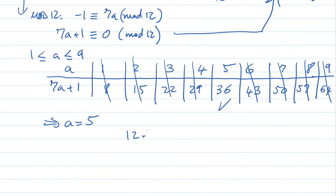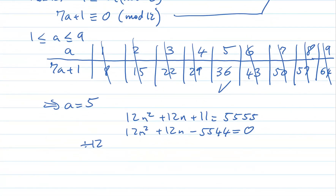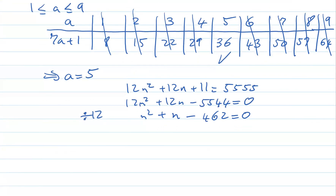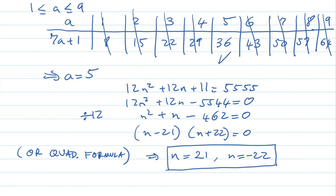This gives the equation 12n² + 12n + 11 = 5555, so 12n² + 12n − 5544 = 0. Dividing by 12 yields n² + n − 462 = 0. Using the quadratic formula or factoring (since 462 can be prime-factored), we get n = 21 and n = −22 as the two solutions.